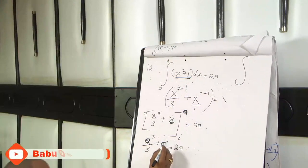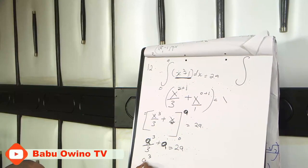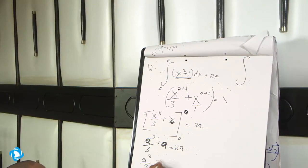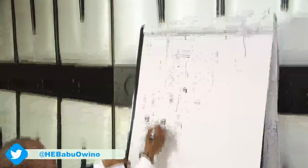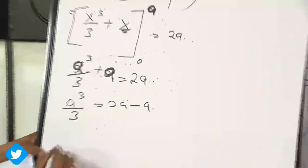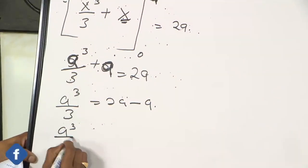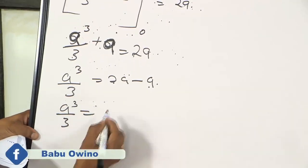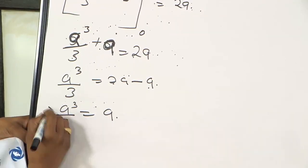Then collect the like terms. A raised to power 3 divided by 3 equals to 2A. When A crosses the other side becomes minus A. So A raised to power 3 divided by 3 equals to 2A minus A is A.